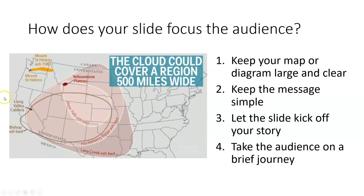Keep your message simple. This is the cloud, and this is the extent of the ash beds. Then let this slide kick off your story. As they're talking about the cloud covering a region 500 miles wide, obviously there's some kind of story. You have a Long Valley caldera and these massive ash beds, so the idea is that the past is the key to the present — whatever ash bed is found in the rock record from a past eruption could potentially apply to now or the future.